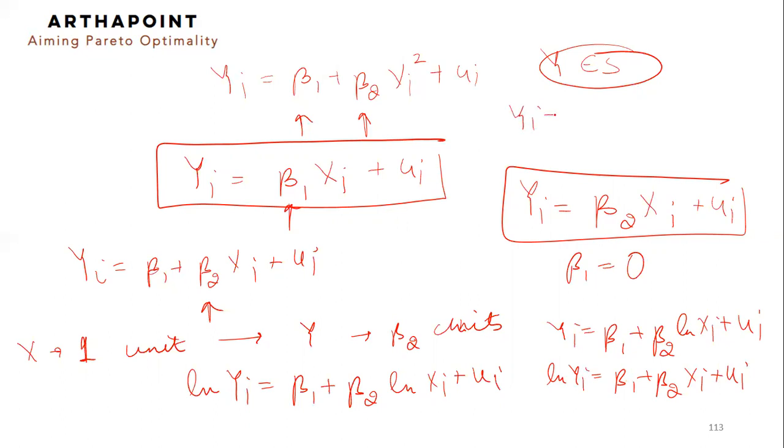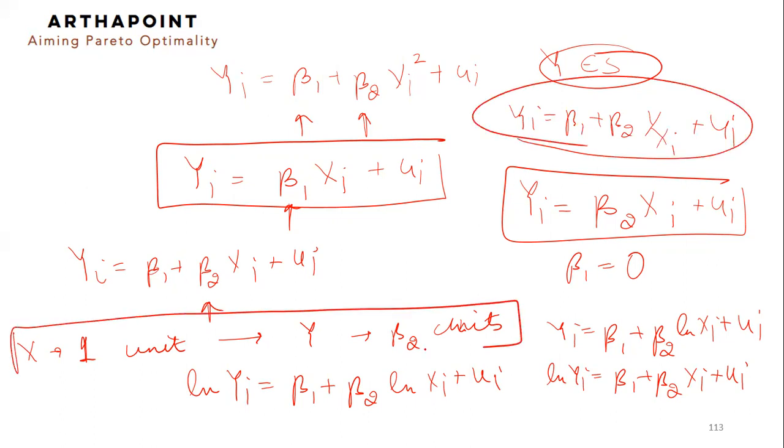Or yi is equal to beta 1 plus beta 2 1 by xi plus ui, which is a reciprocal model. For all of these, the way that we are going to interpret this would be very different.